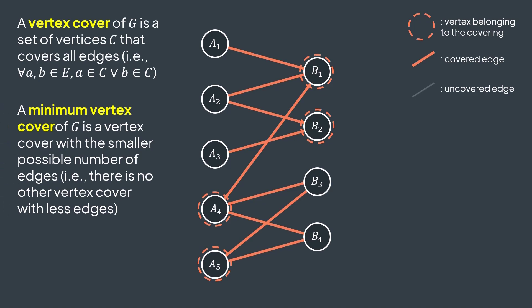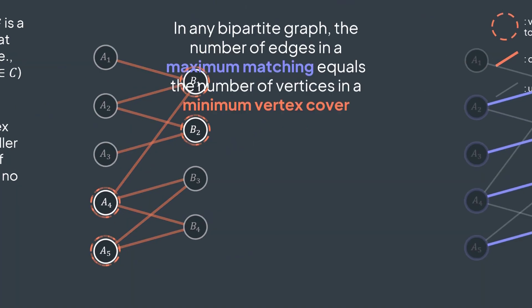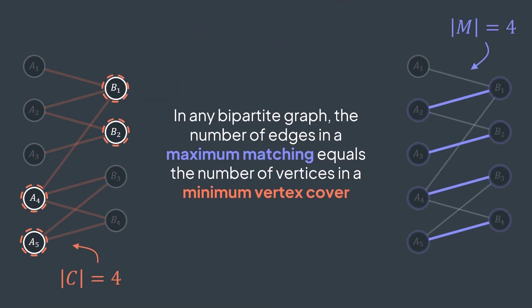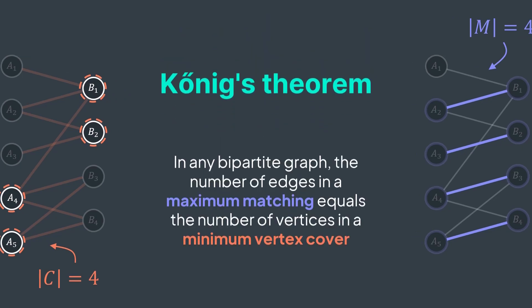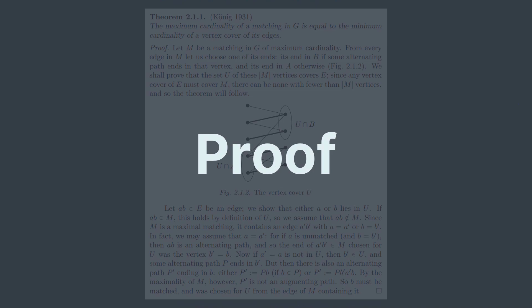Now, what if I tell you that for any bipartite graph, the size of its maximum matching and the size of its minimum vertex cover are equal? That's what König's theorem states. Let's try to prove it before moving to a problem where we can apply it.